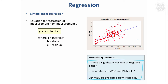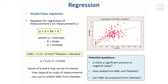It might be that you want to know: can white blood cell count be predicted from platelets? You now have an equation that you could use to predict white blood cell count if you'd measured platelets but hadn't measured white blood cell count. It's probably very unlikely you'd want to do that, but it does allow for that as an option. In our case, the equation looked like this.